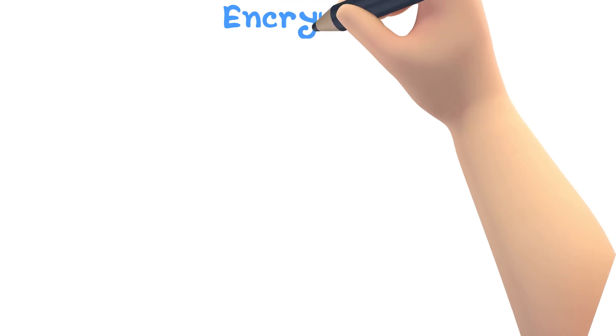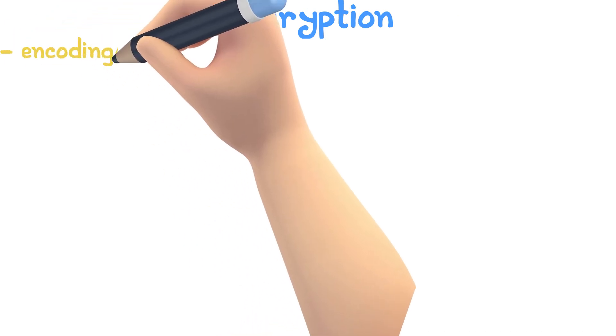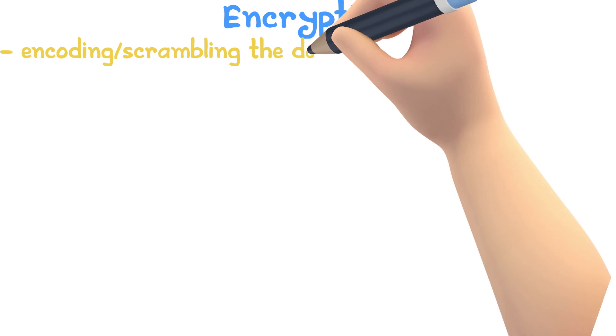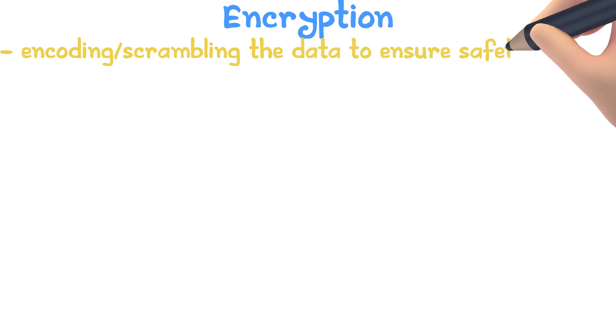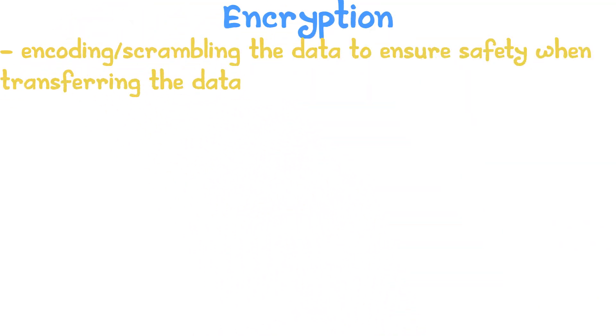I mentioned the word encryption before and you might have wondered what it was. Encryption is the process of encoding or scrambling data in order to ensure safety when transferring the data. This way, any unauthorized users would not be able to understand what the data says.